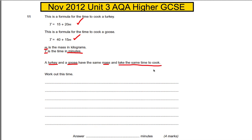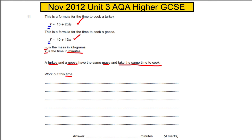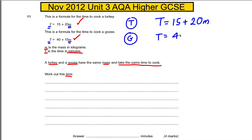We need to work out this particular time. Since the times are the same and the masses are the same, we can set the two expressions equal to each other. For the turkey: time = 15 + 20M. For the goose: time = 40 + 15M. So we solve the equation: 15 + 20M = 40 + 15M.